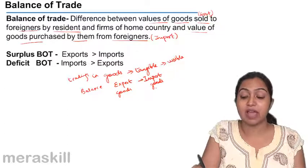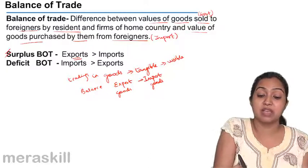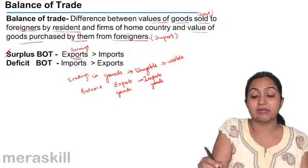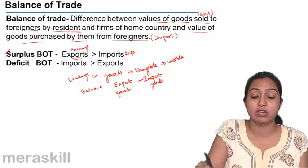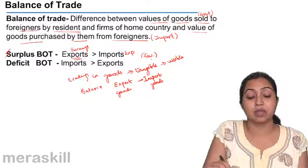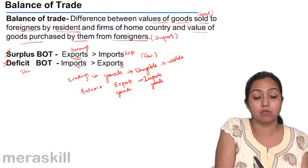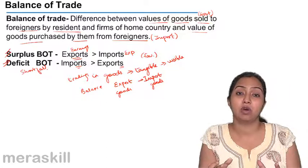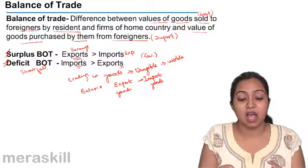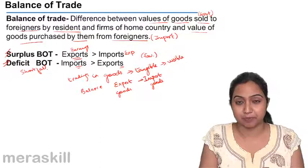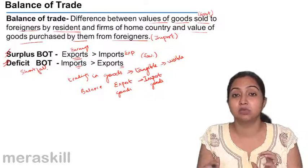If export is more and import is less, we have a surplus balance of trade. If exports are more, it means our earnings are more, and if imports are less, it means our expenditures are less — so we have a surplus or favorable balance of trade. But if imports are more than exports, we say it is a deficit or unfavorable balance of trade, because our expenditure to the foreign country is more and the money we receive is less.